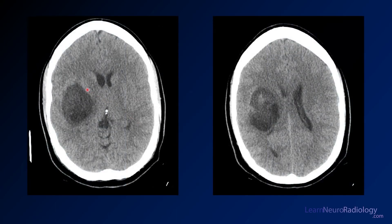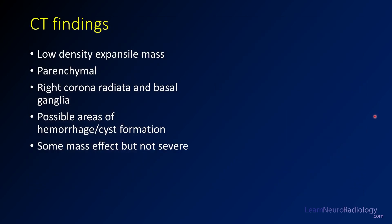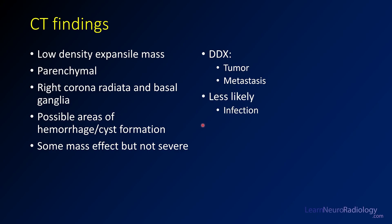Here are some additional images from that CT. You can see those components a little better — a little hyperdensity, maybe blood products, maybe a little bit of calcification. So a little more complex than the tumor we saw in the other study. Again, a low-density expansile mass in the parenchyma. We see a little hemorrhage, maybe some cysts, and some mass effect but not severe. The differential is similar to the previous case — tumor or metastatic disease. Infection may be a little less likely because of those complex features. This patient is going to need an MRI — that's the next step.